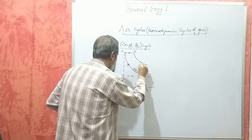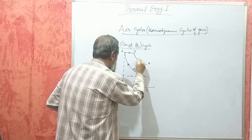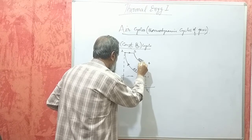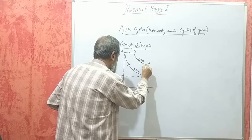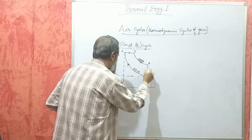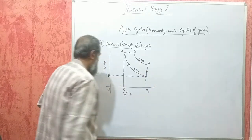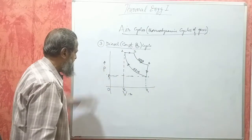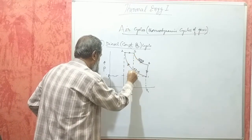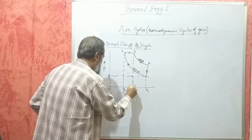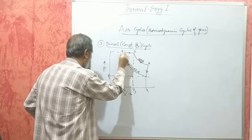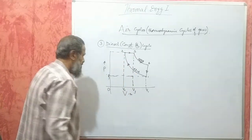The burning takes place at constant pressure. Then, the burnt gases expand adiabatically. This is the adiabatic expansion process, followed by the exhaust process. This volume at the end of constant pressure heating is called V3, and the pressure is constant throughout this process.